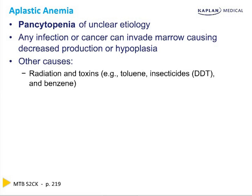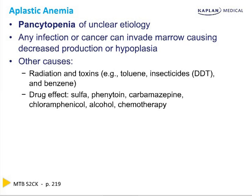Pancytopenia can be from radiation or toxins shutting down the marrow — toluene, insecticides, benzene. It's the direct effect of sulfa drugs. Phenytoin causes folic acid deficiency and can also shut it down. Carbamazepine. Chloramphenicol exists only as a cause of board questions and pancytopenia. Overall, probably the single most common is actually alcohol, because when people are chronic alcoholics, the bone marrow just does not grow when it's pickled in alcohol all the time. And certainly, chemotherapy.